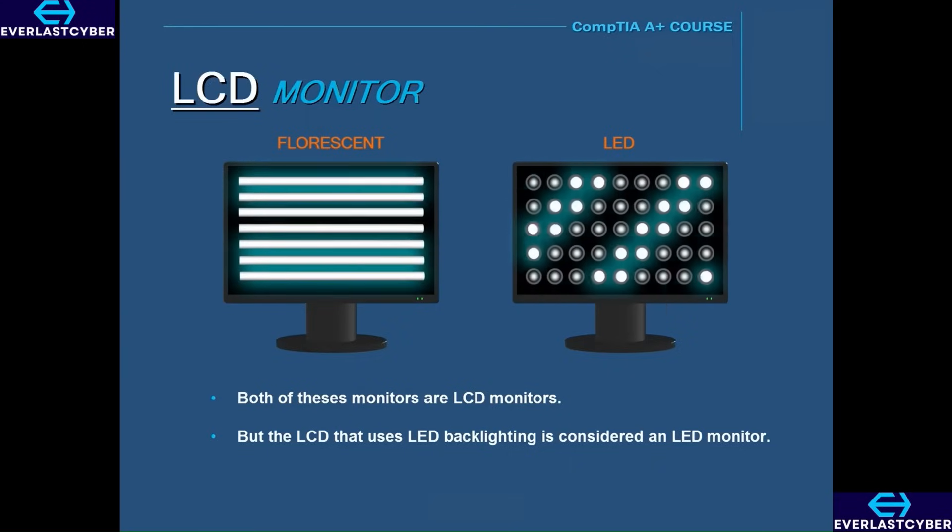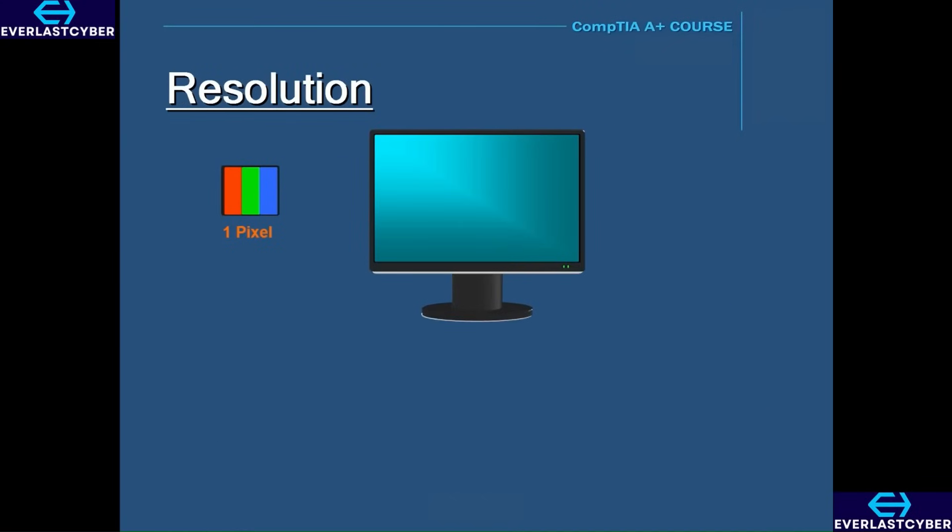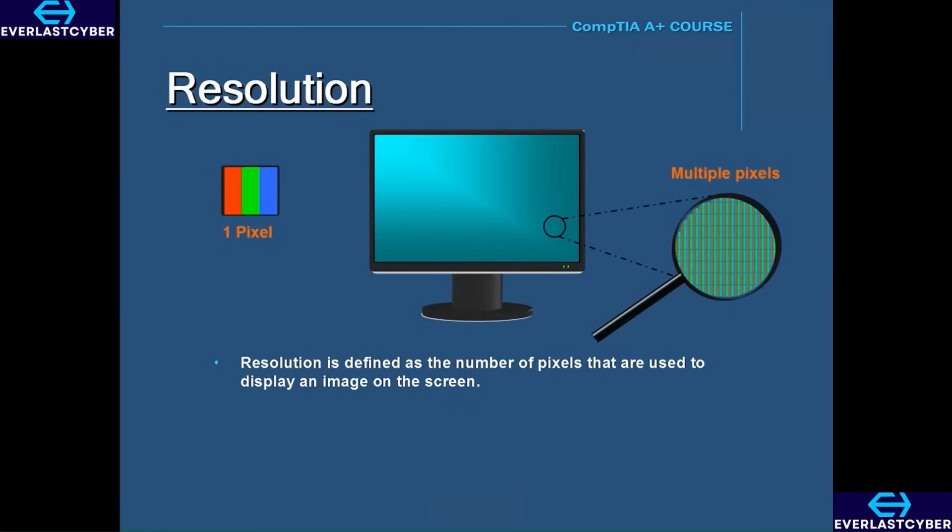Let's talk about resolution. Resolution is defined as the number of pixels that are used to display an image on the screen. For instance, if a monitor is set to a resolution of 1280 by 720, then this means that there are 1280 horizontal pixels by 720 vertical pixels. This means that there are 921,600 total pixels that are being used.